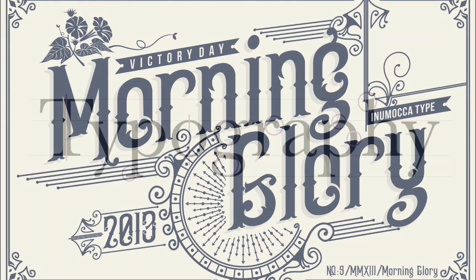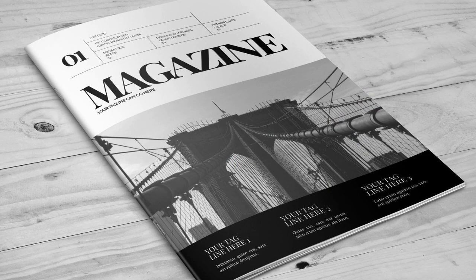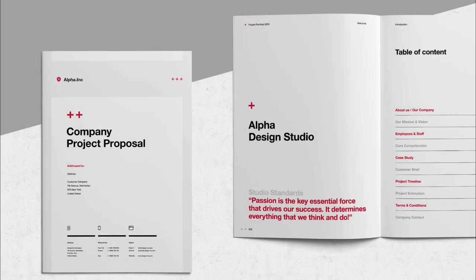Fonts can evoke specific moods based on their form or the era they were inspired by. Serif fonts are often seen as formal and can evoke an older vibe — use them for long-form copy like books, blogs, or magazines, as the serifs help the reader's eyes follow the letter forms easily. Sans serif is one of the most versatile categories; you can use them as display or long-form copy. These letter forms are clean, minimal, and modern-looking, and some can have a touch of personality that adds zing to your design.